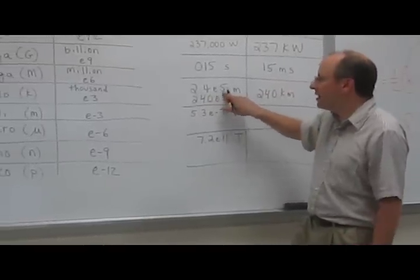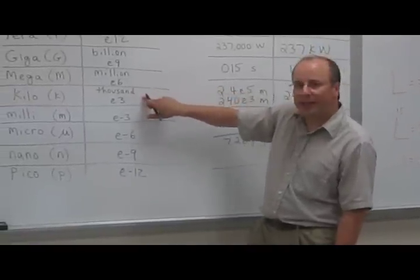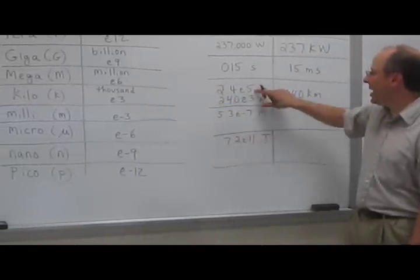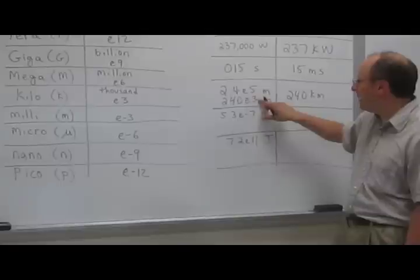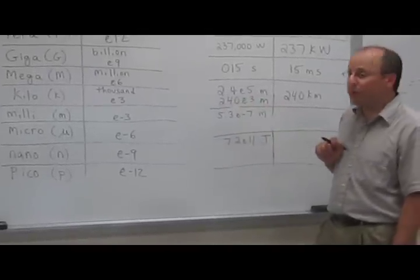Notice again, e to the 5th, we're not yet at million. So we have to go down to 1,000. We go down to 1,000 by dropping 2 places. So we have to make this one bigger by 2 places.